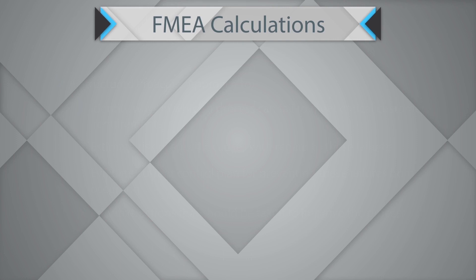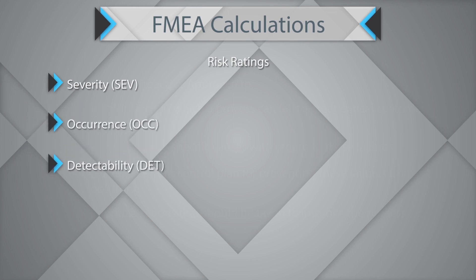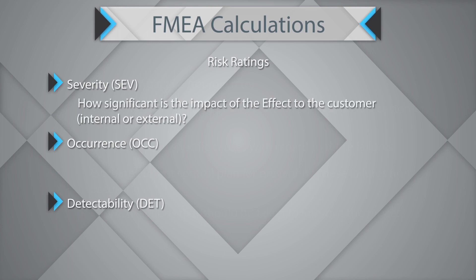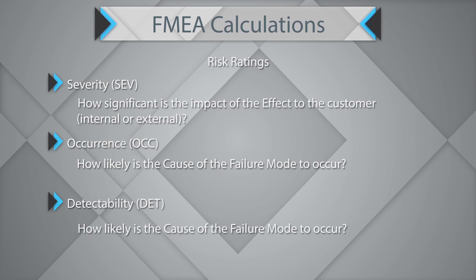The calculations in FMEA: the risk rating in a FMEA document is based on three things — severity, occurrence, and detectability. Severity is a measure of how significant the impact of the effect is to the customer, internal or external. Occurrence is a measure of the likelihood of the cause of the failure mode to occur. And detectability is how likely the failure will escape detection if it occurs.